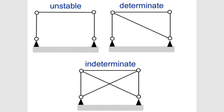Consider these three examples of pin-jointed trusses, where the members are free to rotate at their joints. The first system is unstable because it doesn't have enough unknown reactions to maintain equilibrium — there are only two unknowns but three criteria that must be matched. The second system can be in equilibrium, with the number of unknowns matching the number of equations, making it statically determinate.